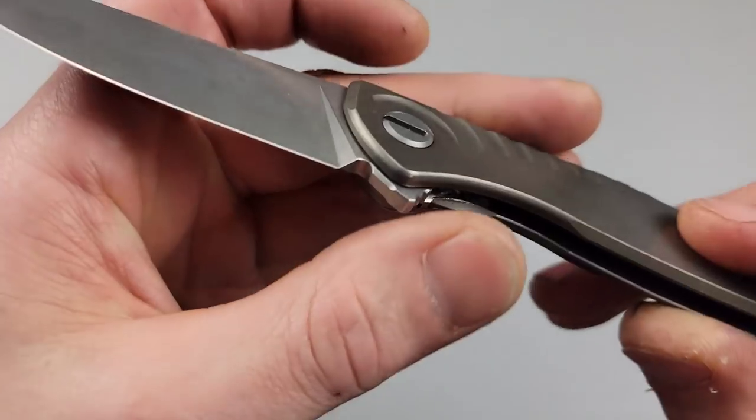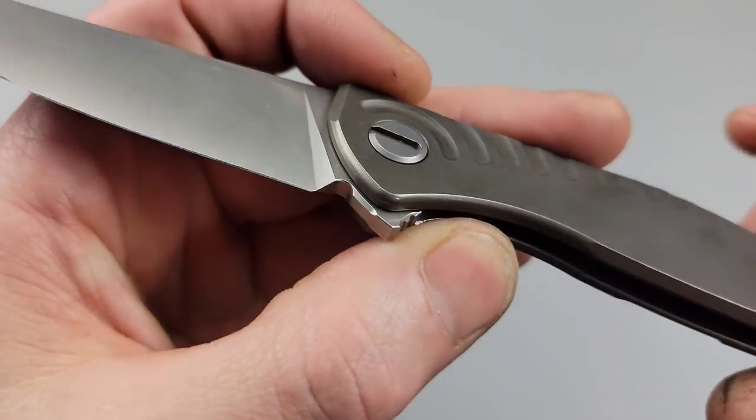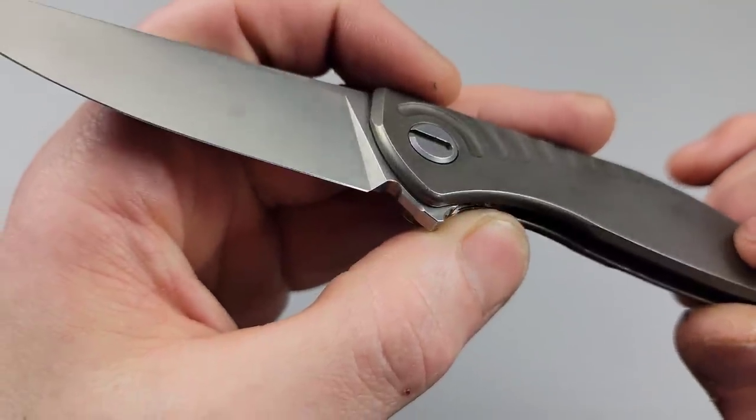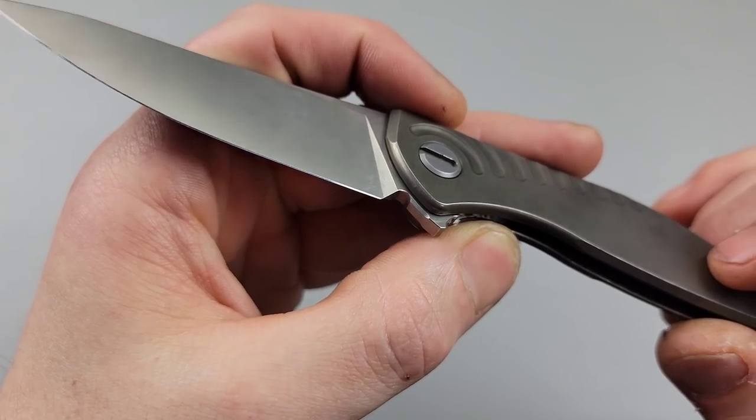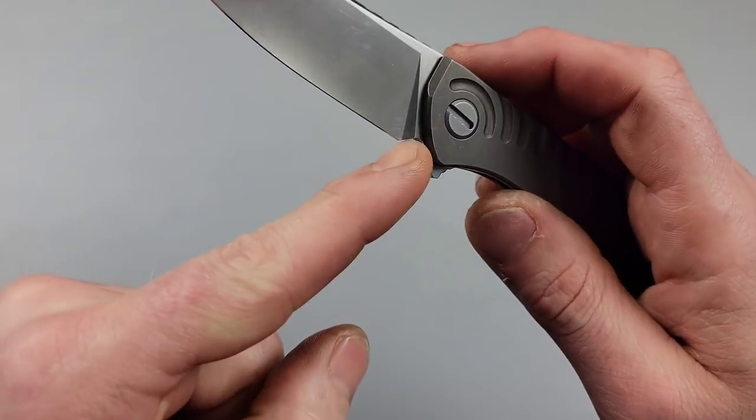If you look, Shirogorov's always do this where they put the plunge grind right next to the edge. So in order for me to change angles, I have to hit the plunge grind or I have to put in a choil.